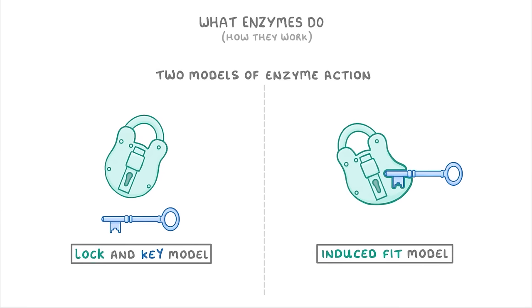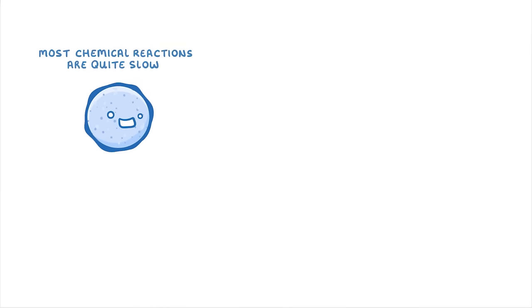Before we get to enzymes themselves, we first need to understand why enzymes are so important to us. The key reason is that in order for a living cell to function properly, it has to carry out a huge number of chemical reactions every second of every day. But the problem is that most of these chemical reactions are naturally quite slow.